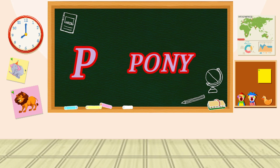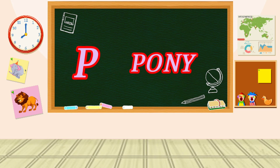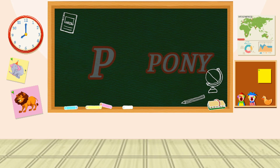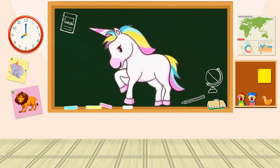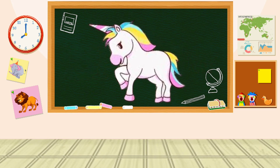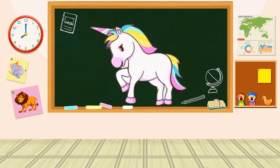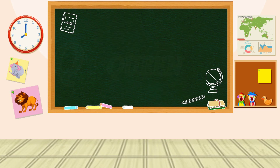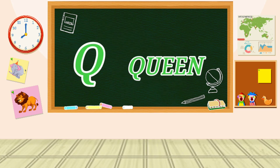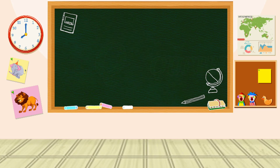P is for Pony. P-P-Pony, P-Pony, P-Pony. Q is for Queen. Q-Q-Queen, Q-Queen, Q-Queen.